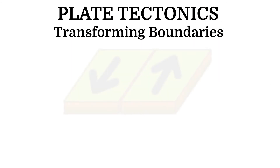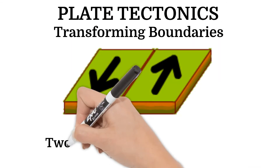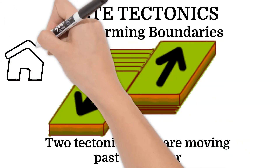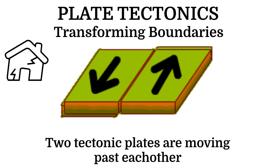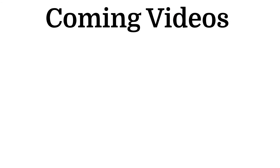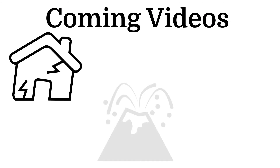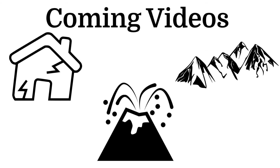Lastly, transforming boundaries are where two plates are sliding past each other, and they can cause earthquakes. In coming videos, we'll take a closer look at the earthquakes, volcanoes, and mountains plate tectonics creates.